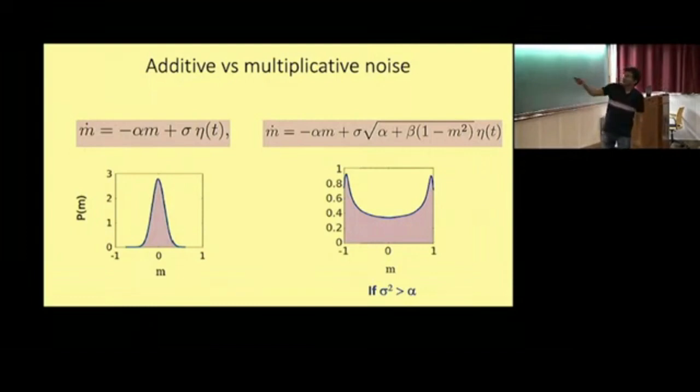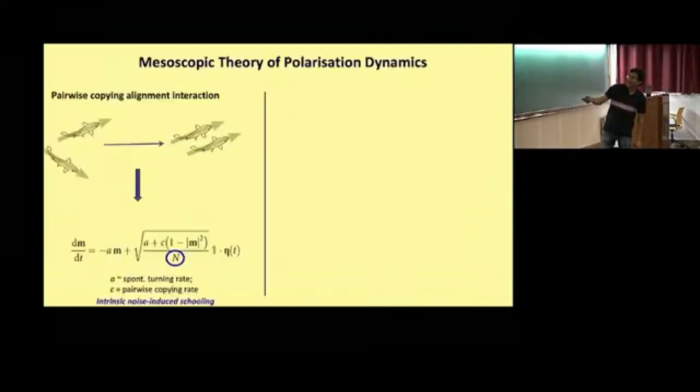And in fact, this is the form of the equation we have for this pairwise alignment interaction model. And what this then suggests is that if the N is sufficiently small, which means the stochasticity is sufficiently high, although the deterministic system is predicting a disorder system, you can actually have ordered flock in this system. But that is true only for finite flocks, not for macroscopic flocks. That's the first prediction of this very simple model.